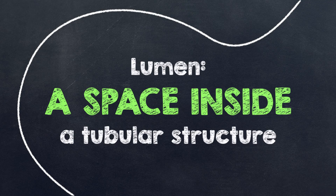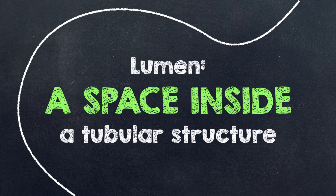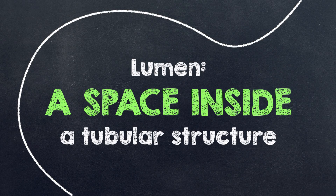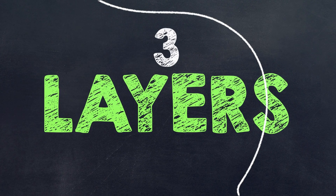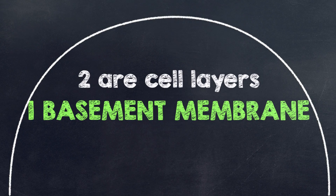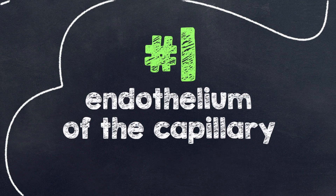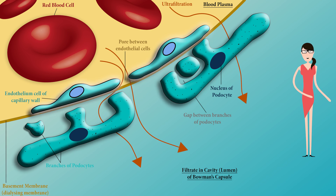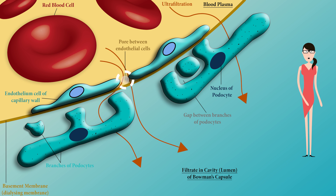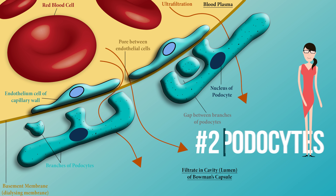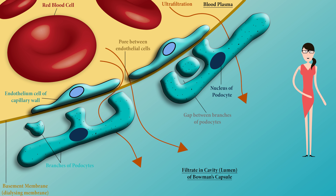Note that 'lumen' refers to the cavity or space inside a tubular structure. The blood in the glomerulus is separated from the lumen of the renal capsule by three layers: two cell layers and one basement membrane. The first cell layer is the endothelium lining of the blood capillary — very thin and perforated with thousands of pores of about 10 nanometers in diameter. All constituents of blood plasma can seep through this layer; the pores are not a barrier to plasma proteins because they are too large. Blood cells, however, cannot usually pass through.